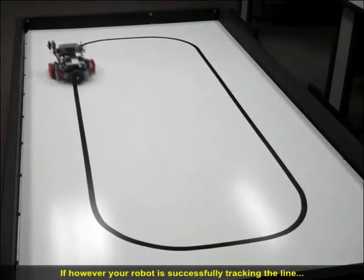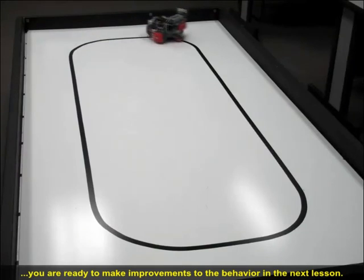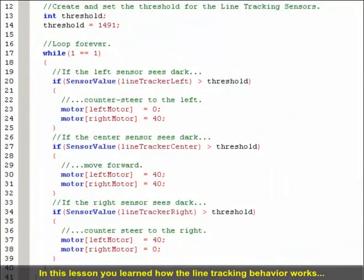If, however, your robot is successfully tracking the line, you're ready to make some improvements to the behavior in the next lesson. In this lesson, you learned how the line tracking behavior works, and downloaded a sample program to the robot to try it out.